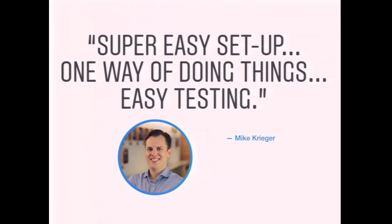I talked to Mike Krieger, the co-founder and CTO of Instagram, about the early experience using Django. His first comment was that it was super easy to get started with — didn't require a lot of decisions or setup, and made testing easy. All of these things allowed Kevin and Mike to build the first version of Instagram in about two weeks and, in only a couple months, get to their first million users.